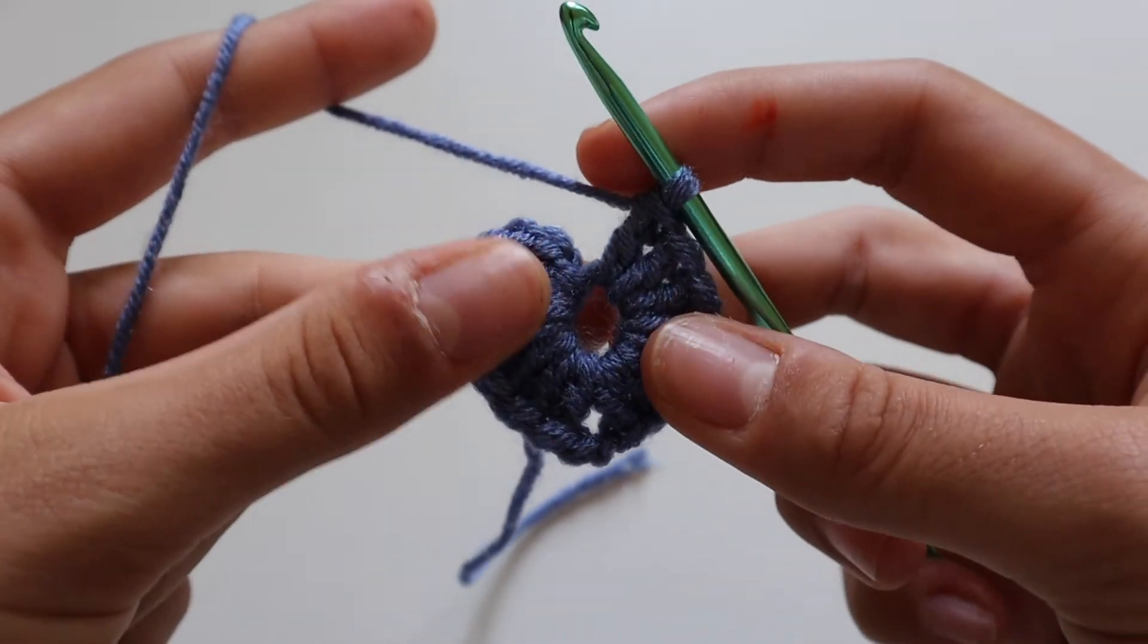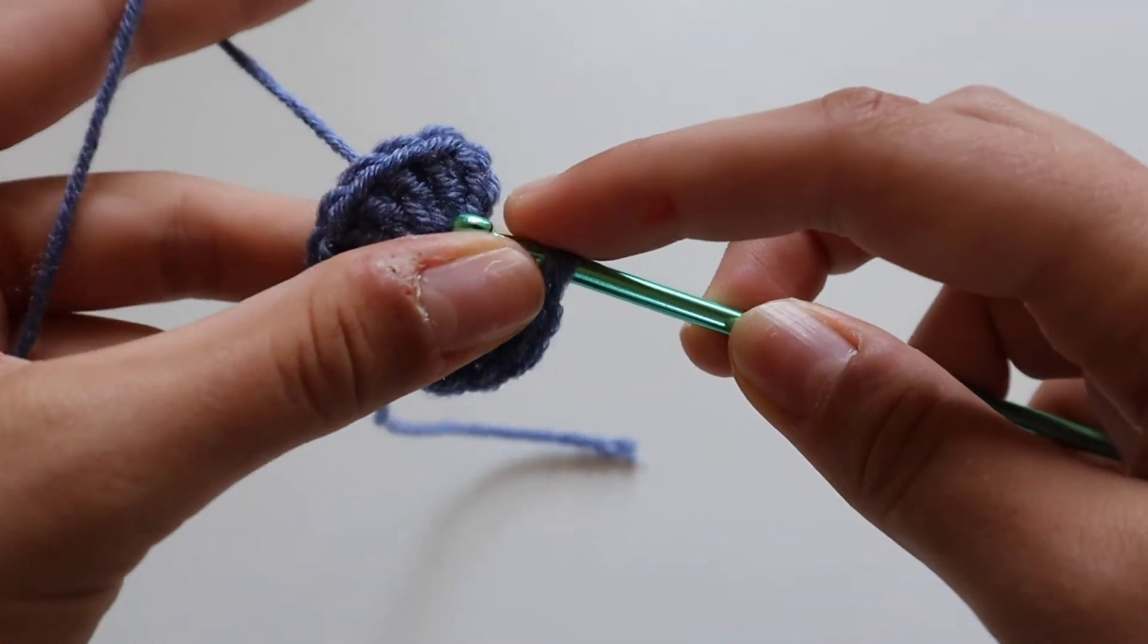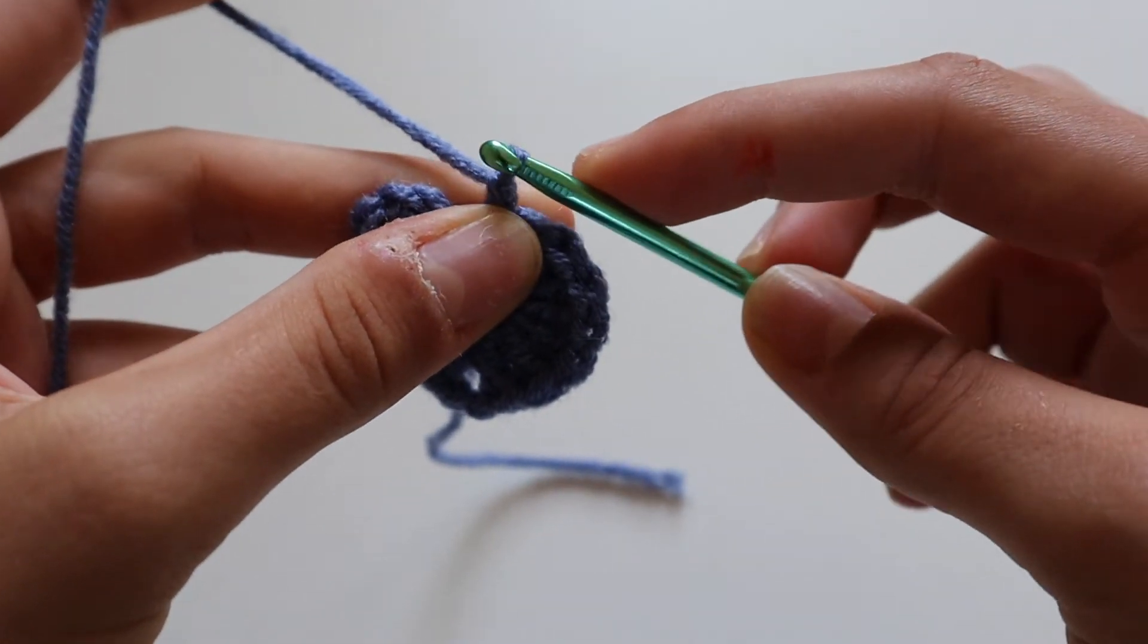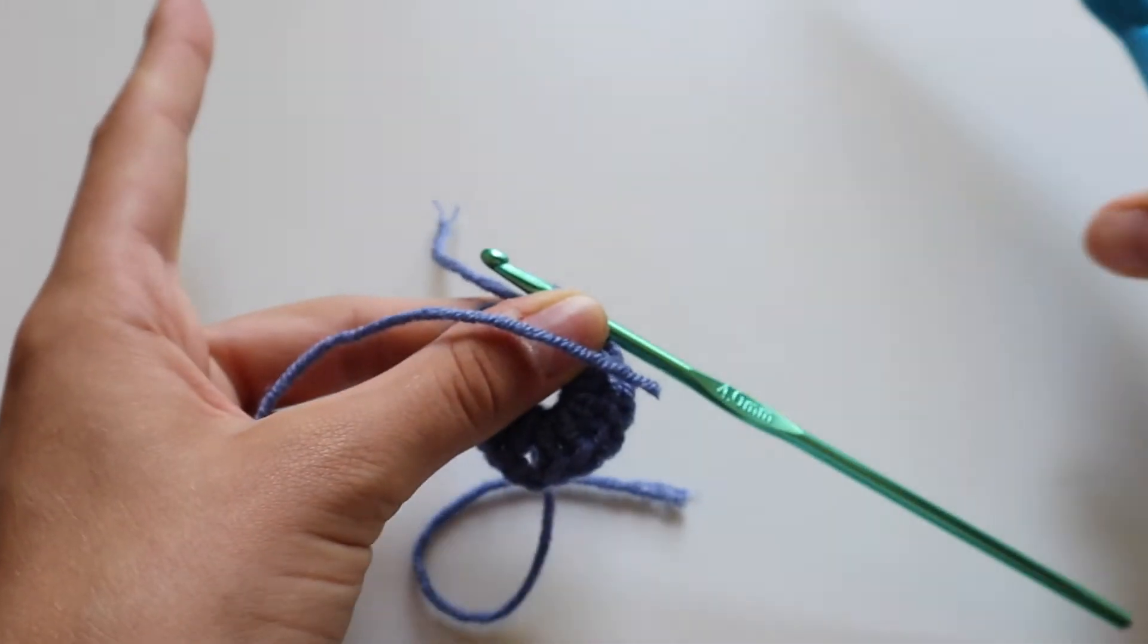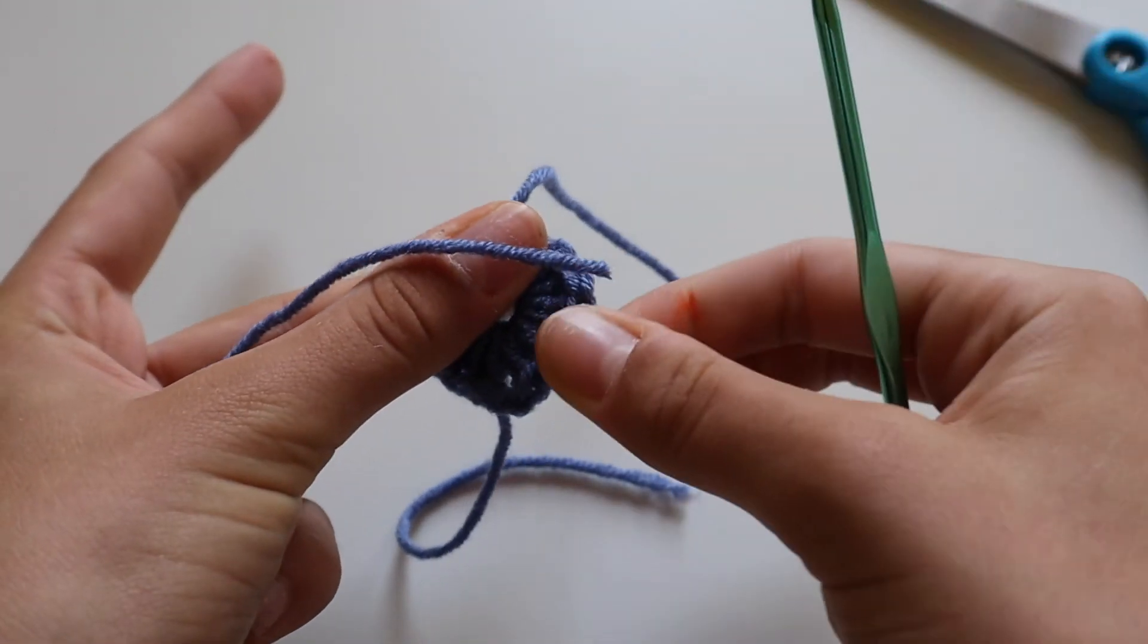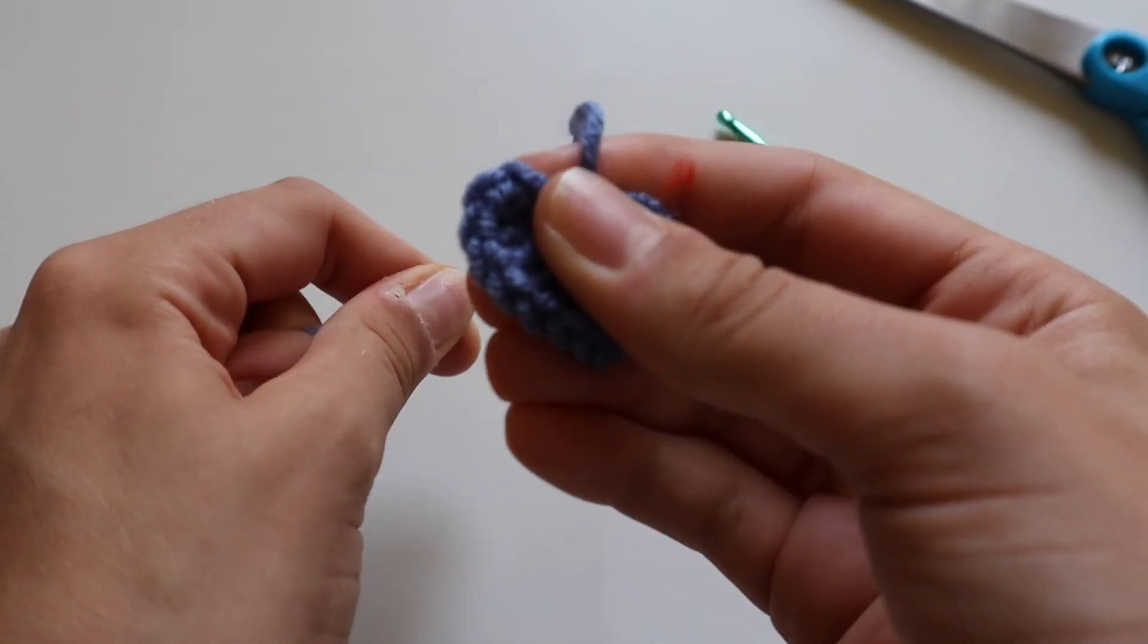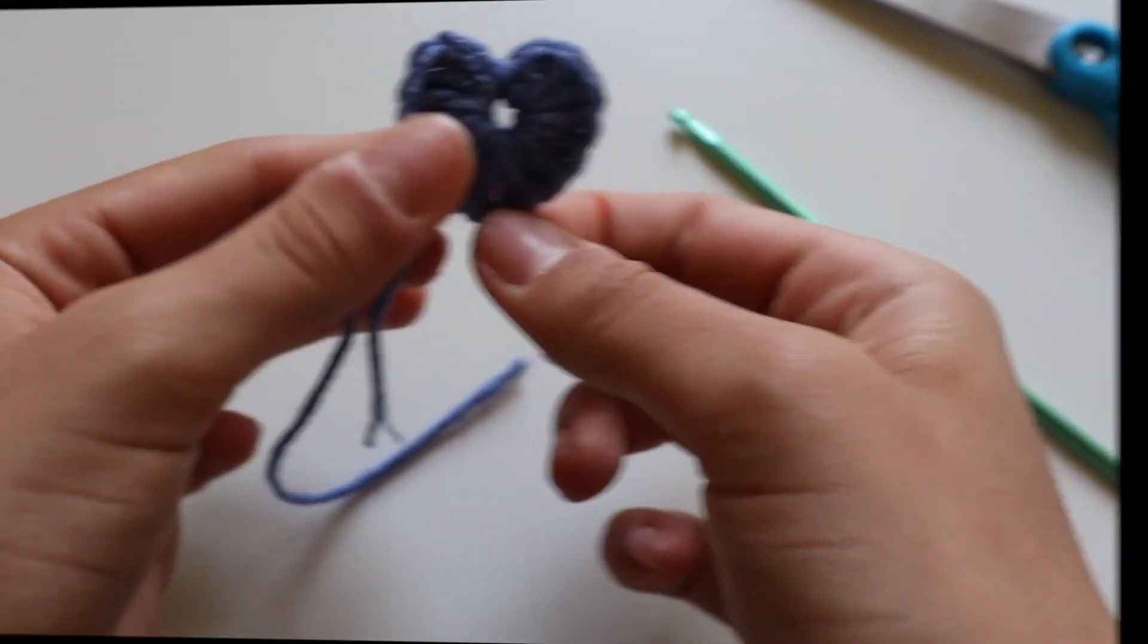So that's my seventh treble crochet. I'm just gonna work a slip stitch just to secure that down and make the peak a little bit nicer. Gonna chain one, and chop off our work, and pull through. And then all you're gonna do is pull on your magic circle tail end. And there you should have your heart.